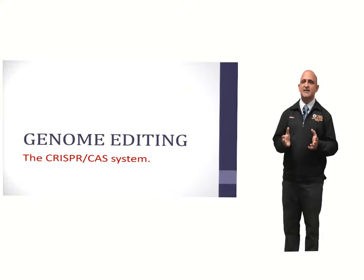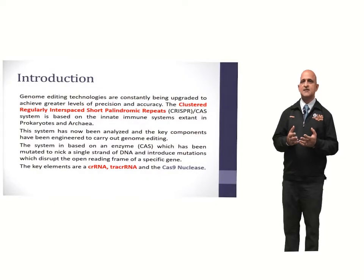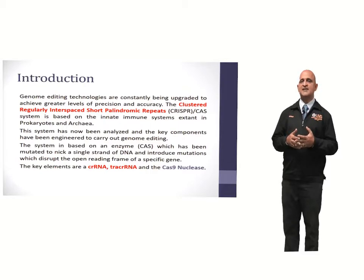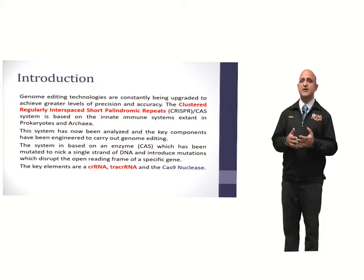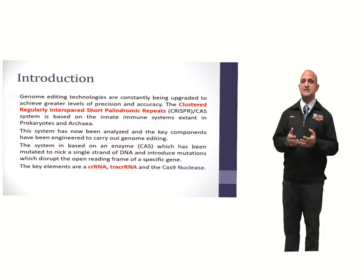Welcome to this module on genome editing. Today we will be discussing genome editing using the CRISPR-Cas system. The CRISPR-Cas system, which represents a bacterial immune system, has been engineered to develop or define genomics in terms of genetic engineering of eukaryotic genomes. CRISPR, which is the clustered regularly interspaced short palindromic repeat system, is now being utilized widely as a genome editing tool. It offers the advantage of precision as well as accuracy.